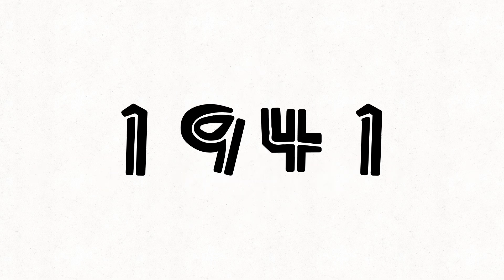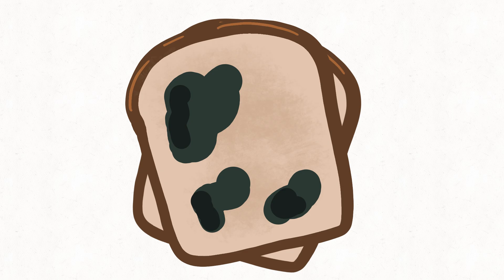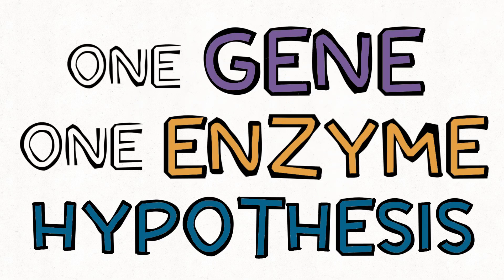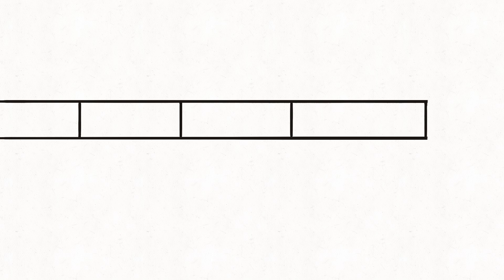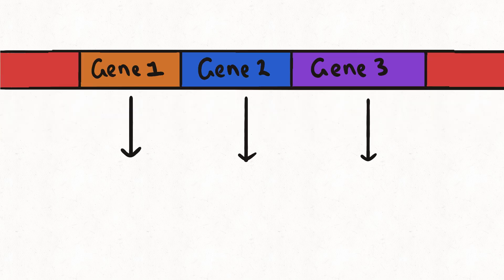Then, a little bit later, in 1941, Beadle and Tatum would visit our other friend, the fungus, and publish one of the most revolutionary papers to date, establishing the one-gene-one-enzyme hypothesis, where each gene was responsible for encoding not a trait, but an enzyme.